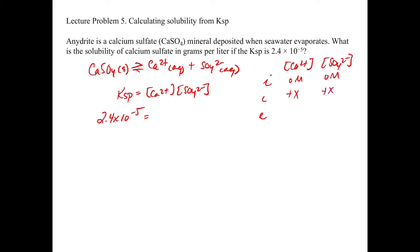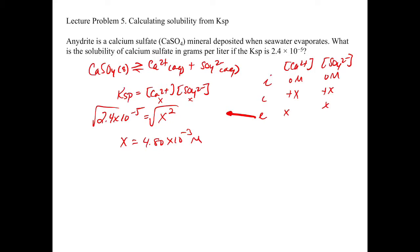So we're going to get plus X and plus X for the change row. And then at equilibrium, we're going to have X and X. Now we can plug those values in for calcium 2+ and sulfate 2 minus, giving us X squared. So 2.4 times 10 to the minus 5 equals X squared. Taking the square root of both sides, X equals 4.80 times 10 to the minus 3 molar. Because of the stoichiometry, this equals the concentration of Ca²⁺ and also the concentration of SO₄²⁻.